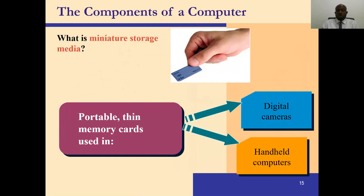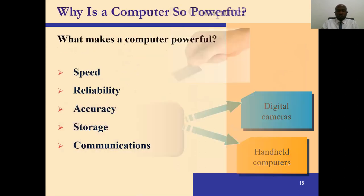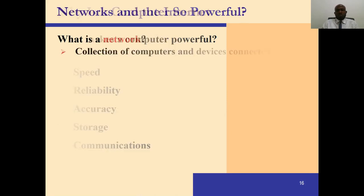What makes a computer powerful? Computers are powerful because of their speed, reliability, and accuracy. They are able to store large amounts of data and they are able to communicate with others — so you can use a computer for communication. These are some of the key things that make computers so powerful.